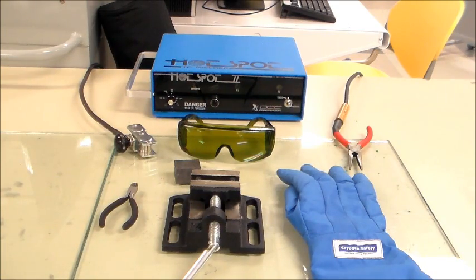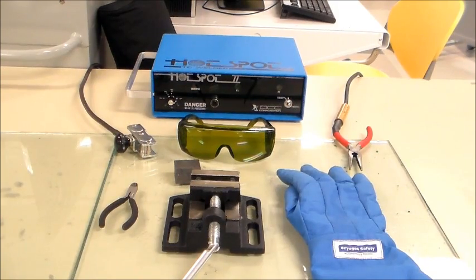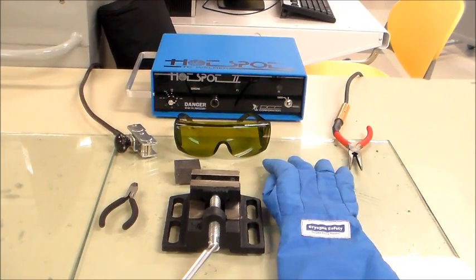Then proceed to make sure that the welder is connected to electricity. Also make sure that the area you are going to be working over is not an electricity conductive area. In this case, I am using a glass to protect myself.